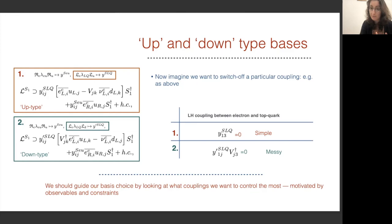Now I want to motivate why we would choose one over the other. Imagine we want to switch off a particular coupling, maybe between the first generation lepton, the electron, and the third generation quark, which is the top. In the uptype basis, this is very simple - we just set that particular coupling to zero. But in the downtype quark basis, this becomes an expression that we have to set to zero, so it's a little bit more messy. It's not as simple as varying one particular number. We should guide our basis choice by looking at what couplings we want to control the most, and motivate this with observables and constraints.